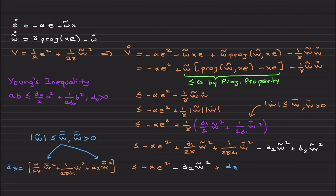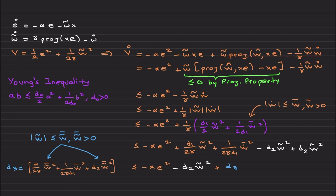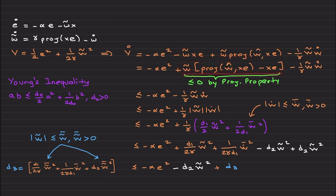ė is this expression, and with the projection operator, ŵ̇ − ẇ is the W̃ dynamics. I consider this Lyapunov function candidate and take its derivative: the ė term and the W̃·W̃̇ term. I first group these two terms together. Does this look familiar? Yes — by the projection operator property, this is less than or equal to zero. So in the next step we can discard it, finding an upper bound that leaves these two terms.